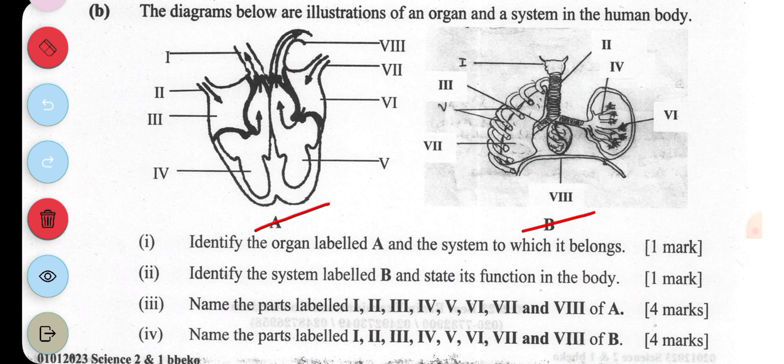The organ A is the heart, the human mammalian heart, and it belongs to the circulatory system.